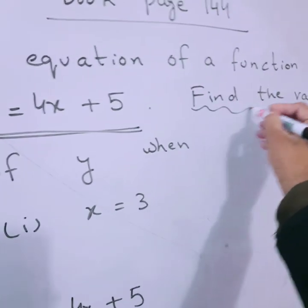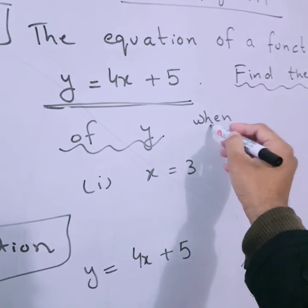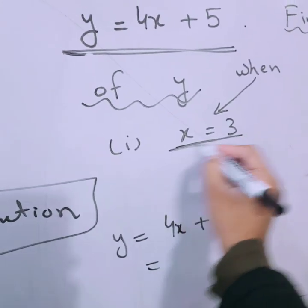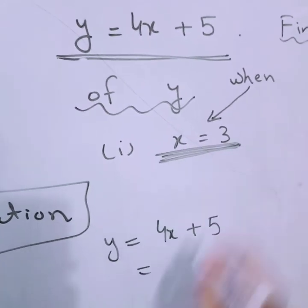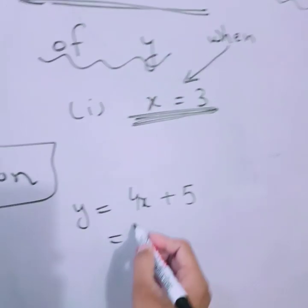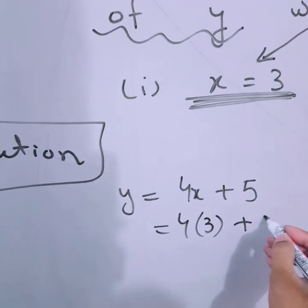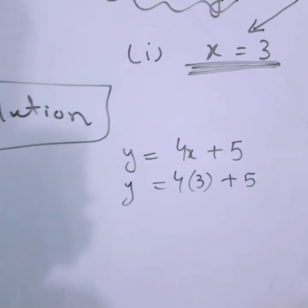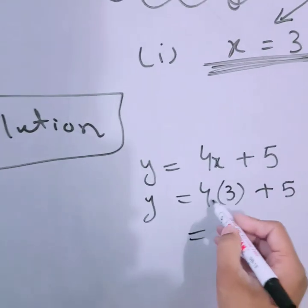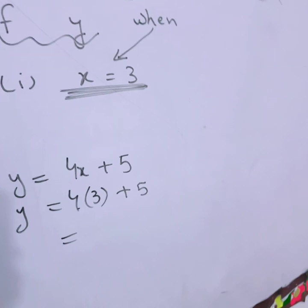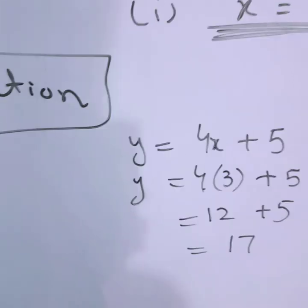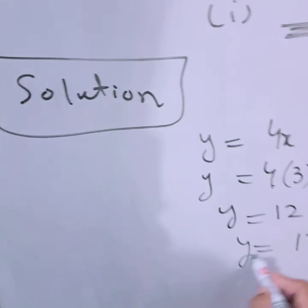We have to find the value of y when x equals 3. In place of x, we shall write 3, and everything else shall remain as it is — there is no effect on other things. So 4 is being multiplied with 3: 4 times 3 is 12, plus 5. 12 plus 5 equals 17. So we have gained the value of 17.